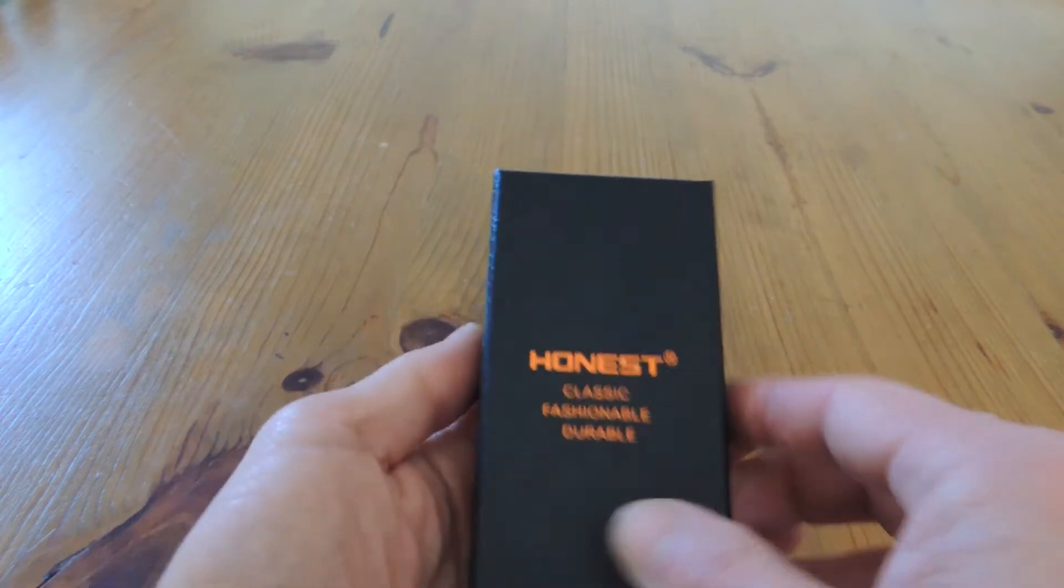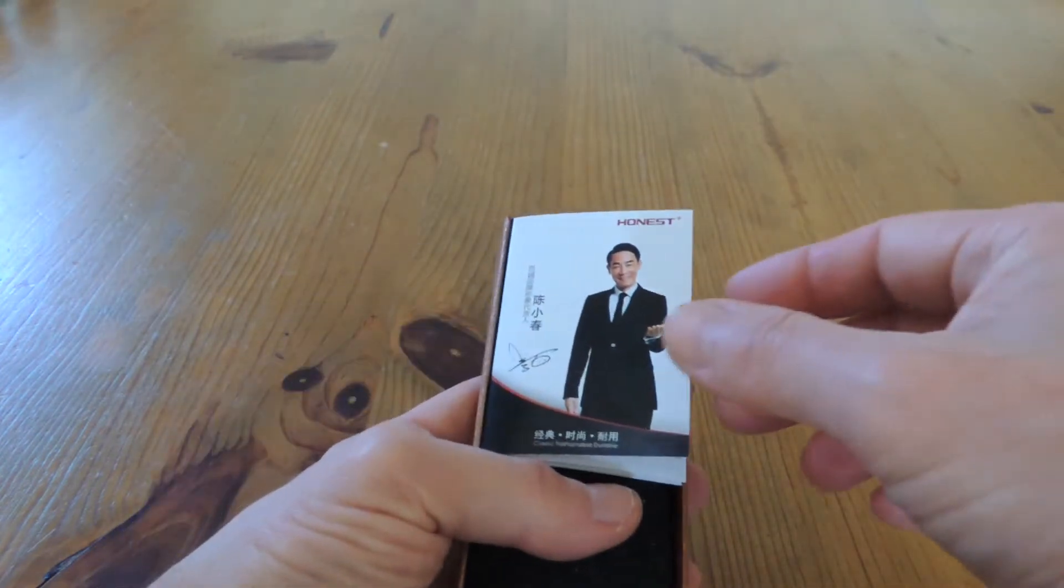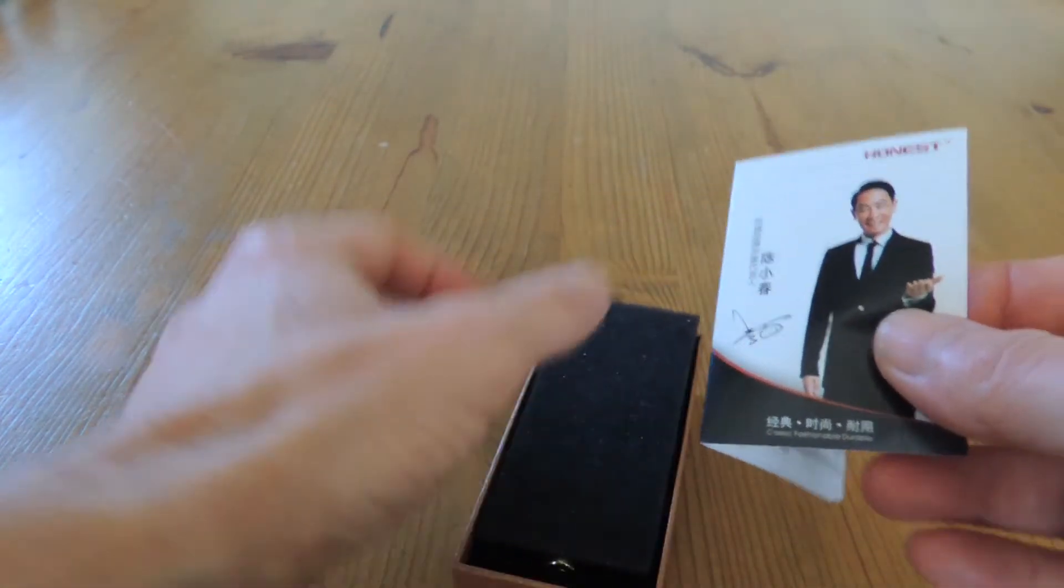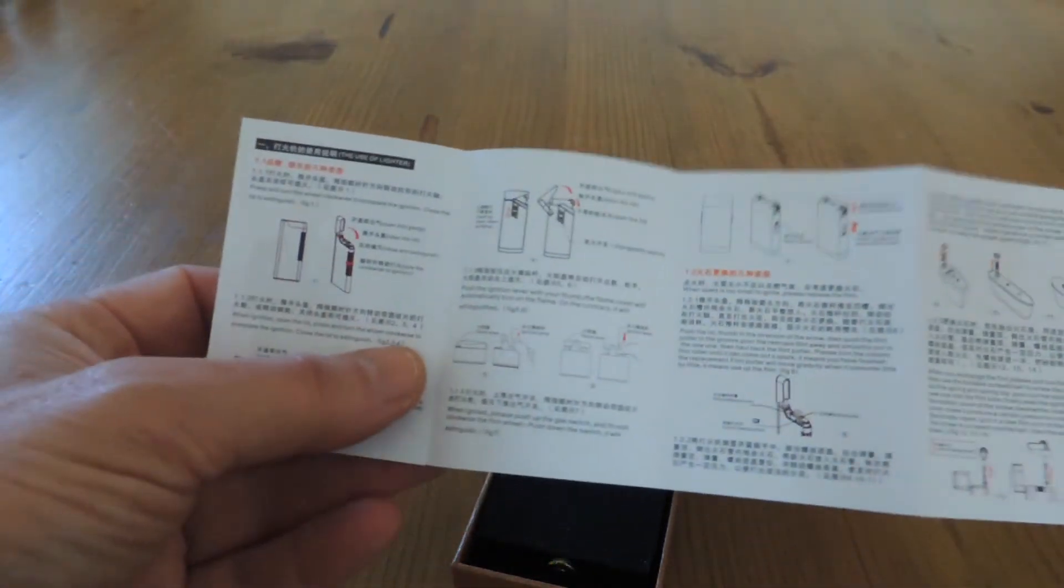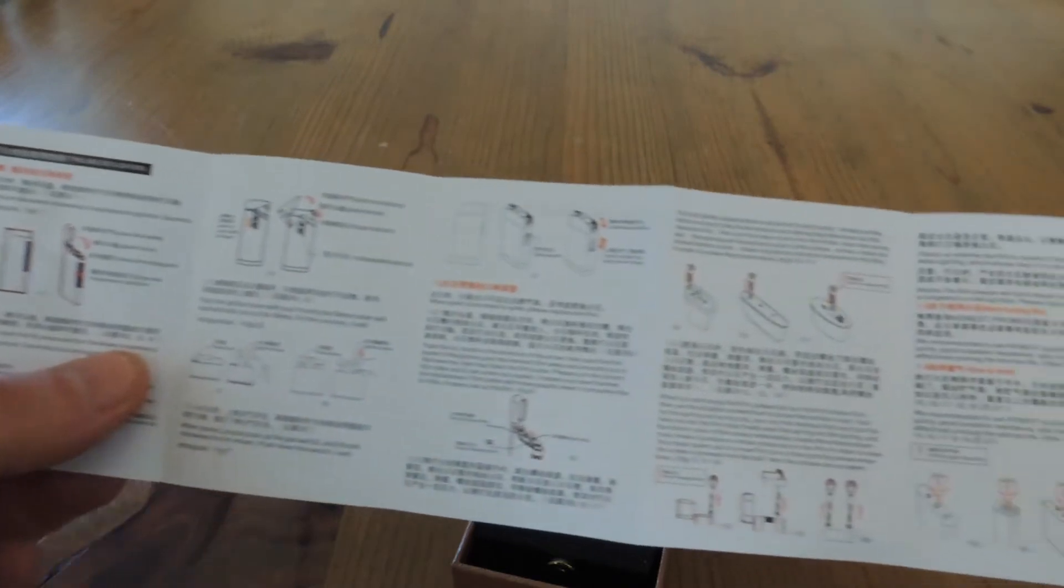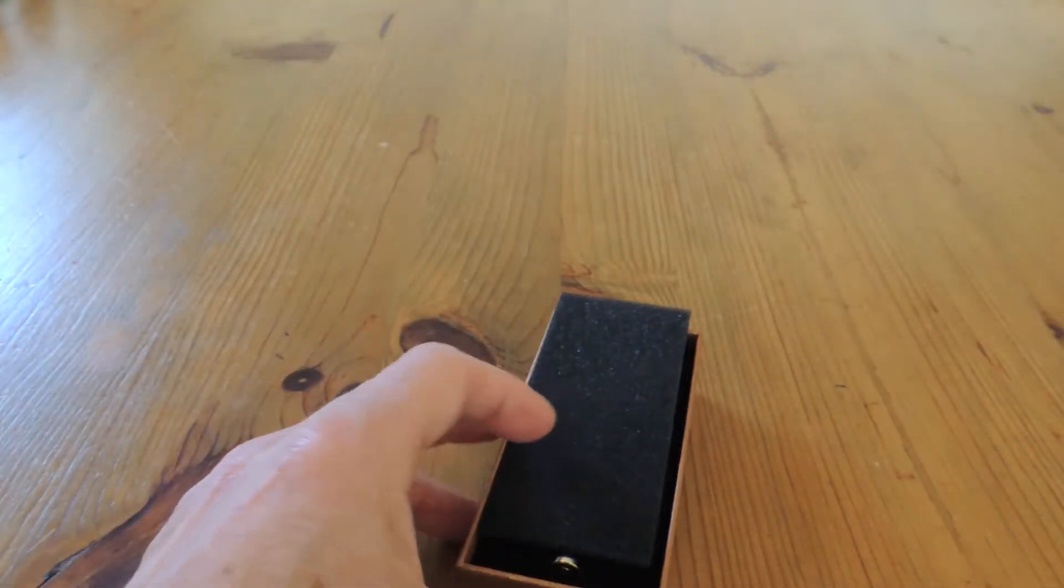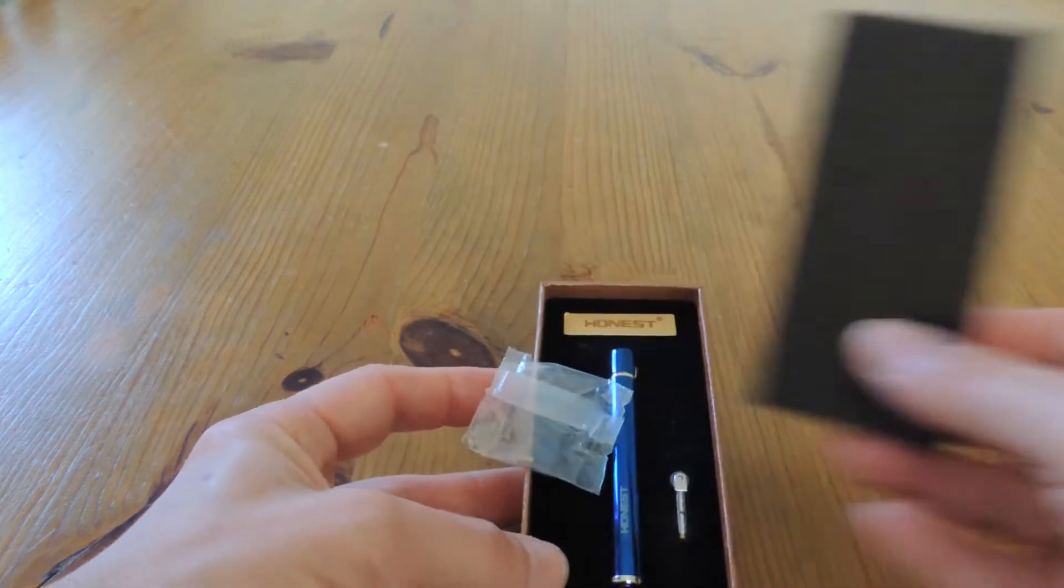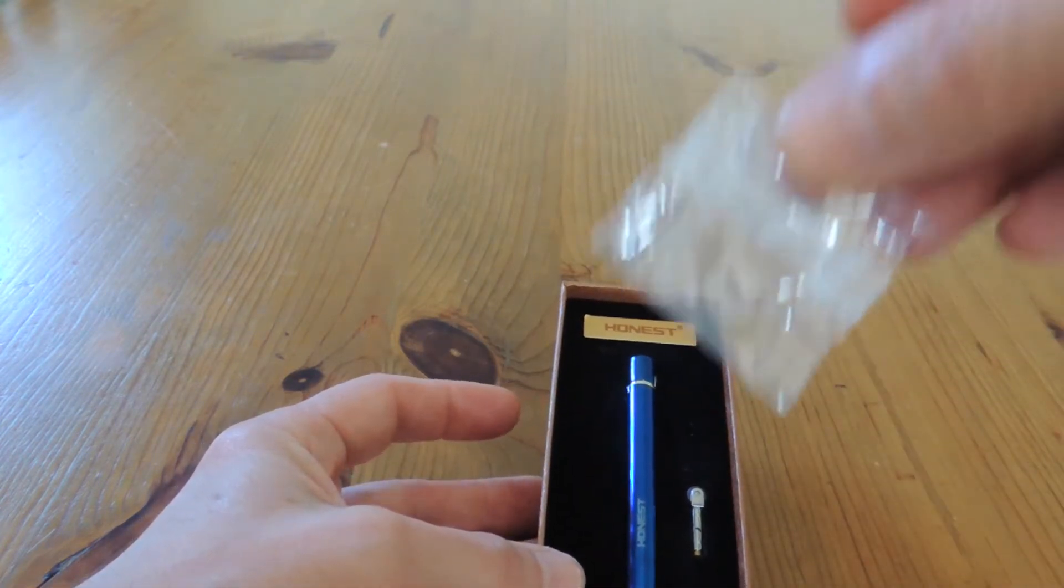Let's have a look see what we got in the box. We've got a pamphlet booklet manual. This manual pertains to loads of different lighters within the Honest range, not just this particular model. We've also got two spare flints.